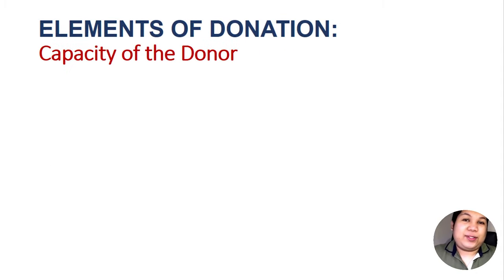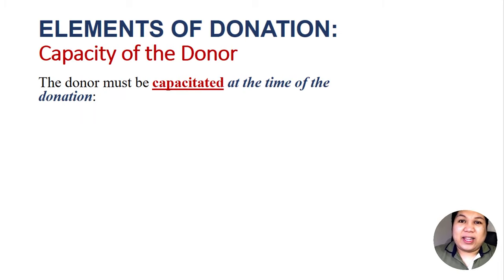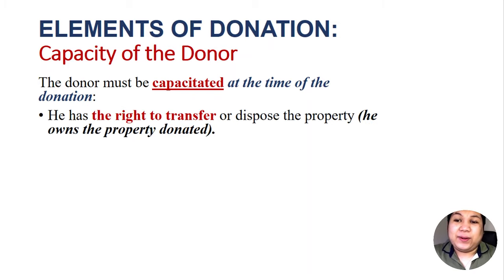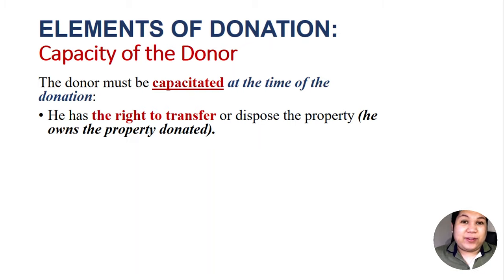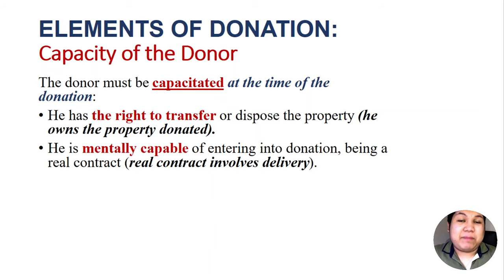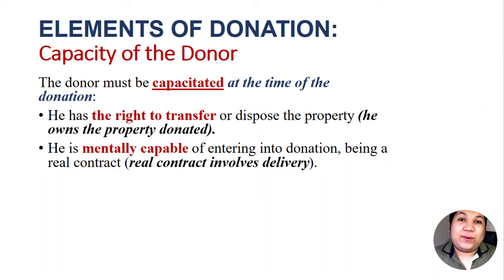The first element is the capacity of the donor. When the donor donates something, he must be capacitated to do so at the time of donation. This is reflected through three things: first, he has the right to transfer or dispose the property — meaning he owns the property donated. You cannot donate something which is not yours. So at the time of donation, the donor should have the right to transfer the property; otherwise, the donation is void.